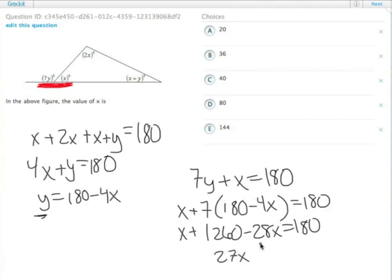So we end up with 27x on one side, and then we subtract 180 from 1260 and get 1080. So x itself equals 40. Answer choice C.